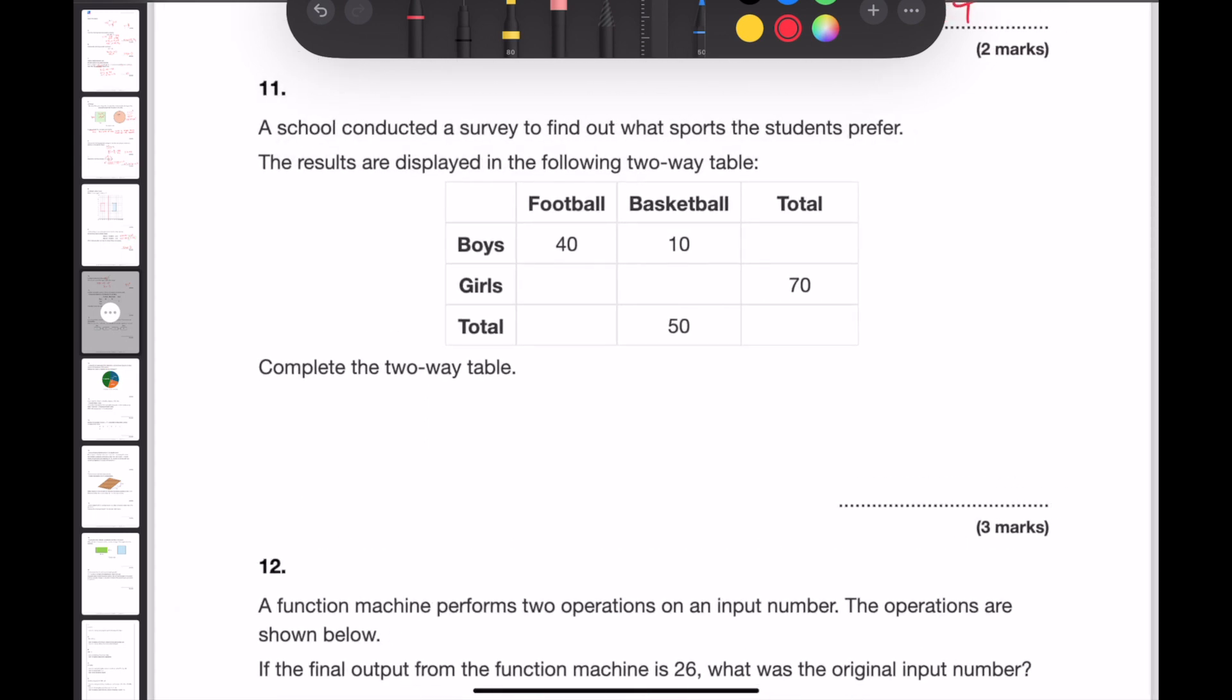Question 11. A school conducted a survey to find out what sports the students prefer. The results are displayed in the following two-way table. Every row has a total. 40 and 10 means that there are 50 boys altogether. 50 plus 70 means that there were 120 students altogether. Looking at the basketball total, I've got 50. And if 10 of them were boys, that means that 40 were girls. And if there were 40 girls that liked basketball, but 70 girls altogether, that means that there were 30 girls that liked football. 40 plus 30 is 70. I've now completed the two-way table.